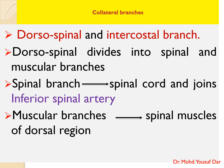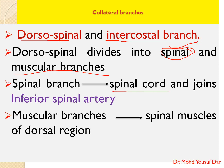Each intercostal artery then divides into a dorsal spinal branch and an intercostal branch. The dorsal spinal branch further divides into a spinal branch and muscular branches. The spinal branch enters the spinal canal, supplies the spinal cord, and joins the inferior spinal artery. The muscular branches supply the spinal muscles of the dorsal region.